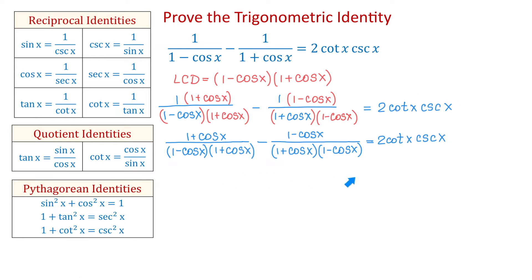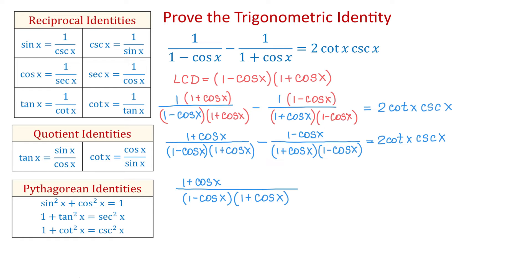So here we have it. Now let's subtract these two fractions. The denominator will be 1 minus cosine of x times 1 plus cosine of x. In the numerator, we will have 1 plus cosine of x. This negative has to be distributed to each term, so then we will have minus 1 plus cosine of x. Down here we write minus 1 plus cosine of x. And on the right side: 2 cotangent of x cosecant of x.